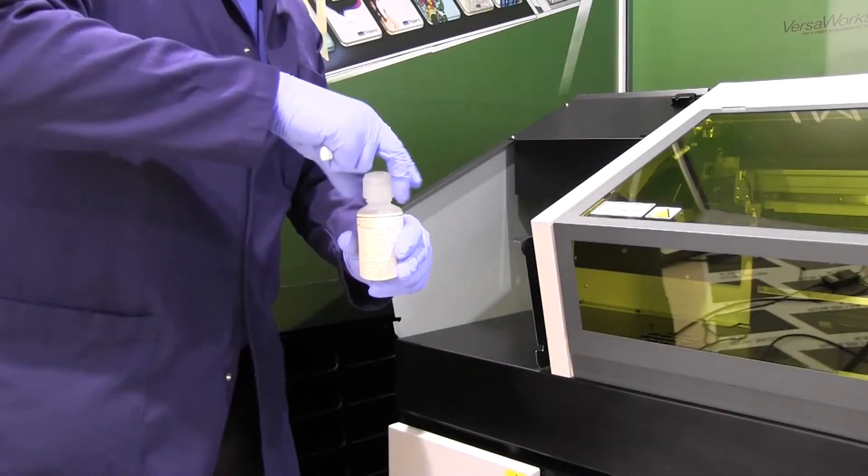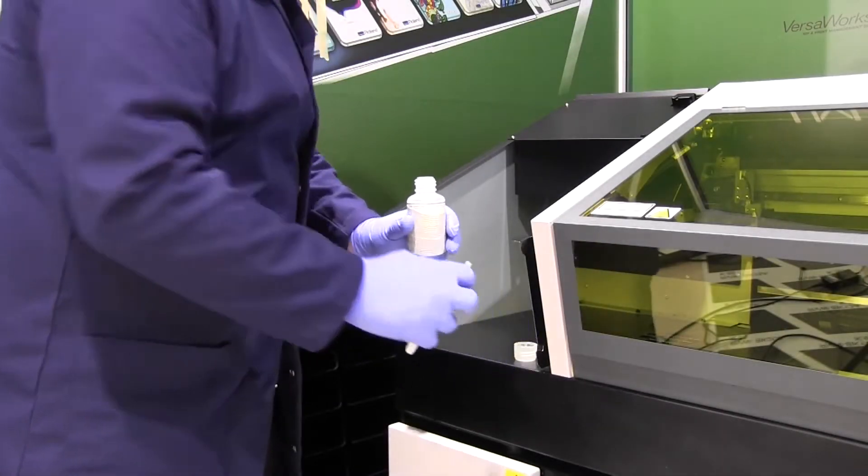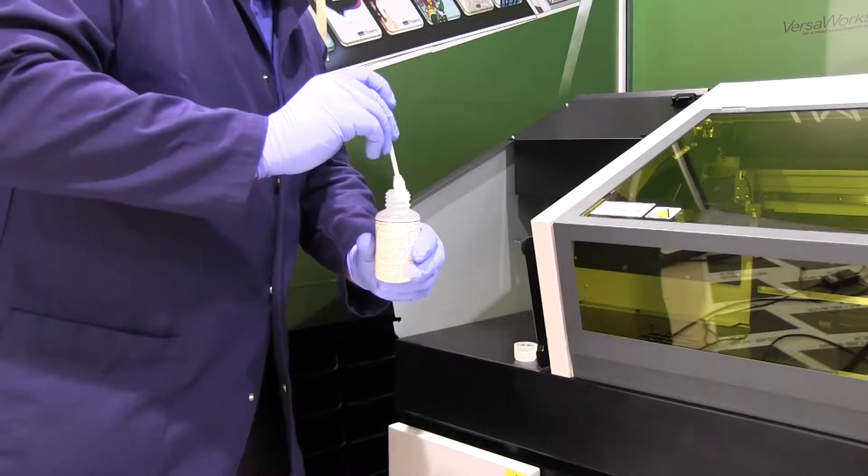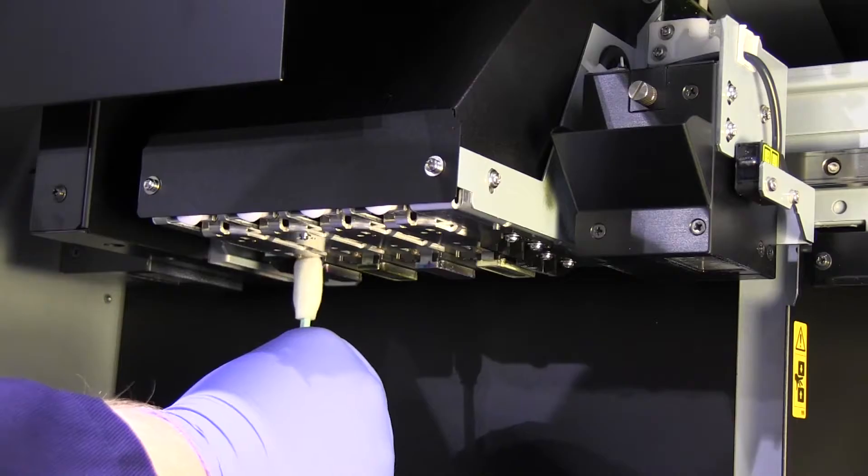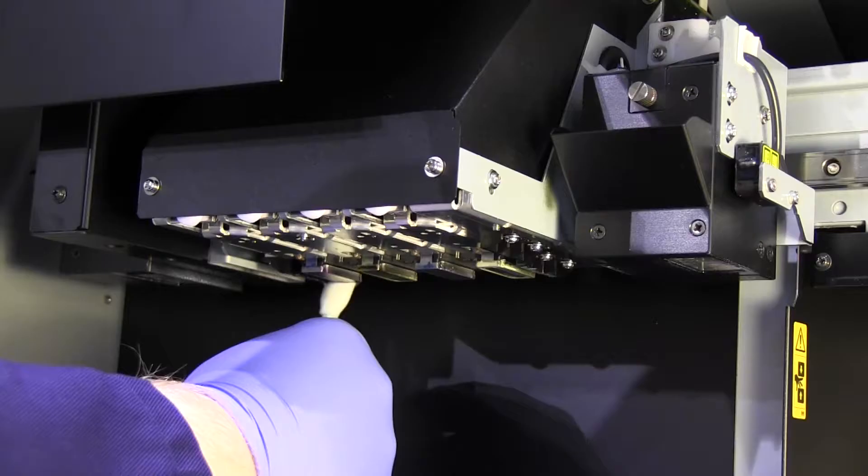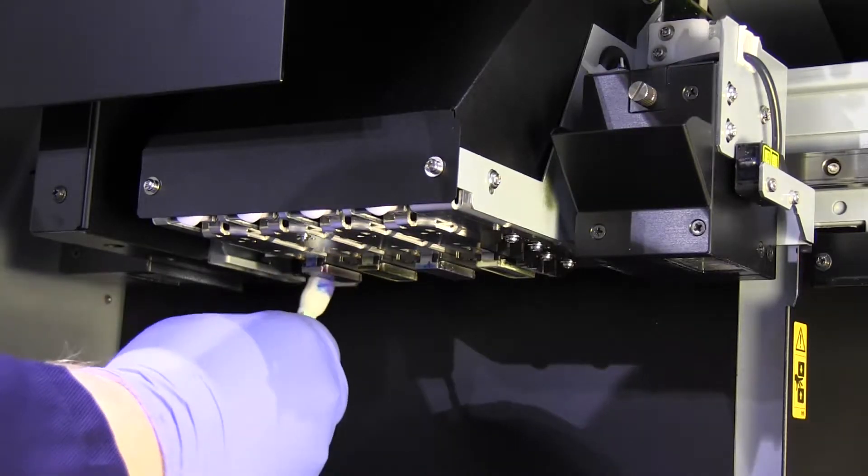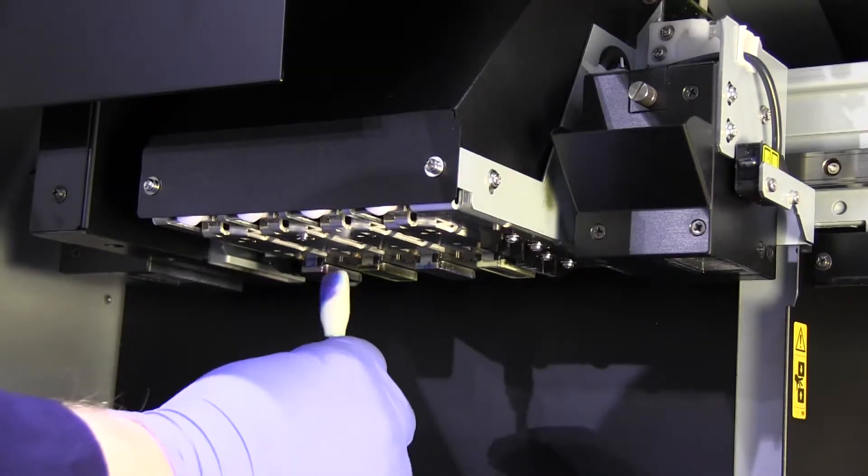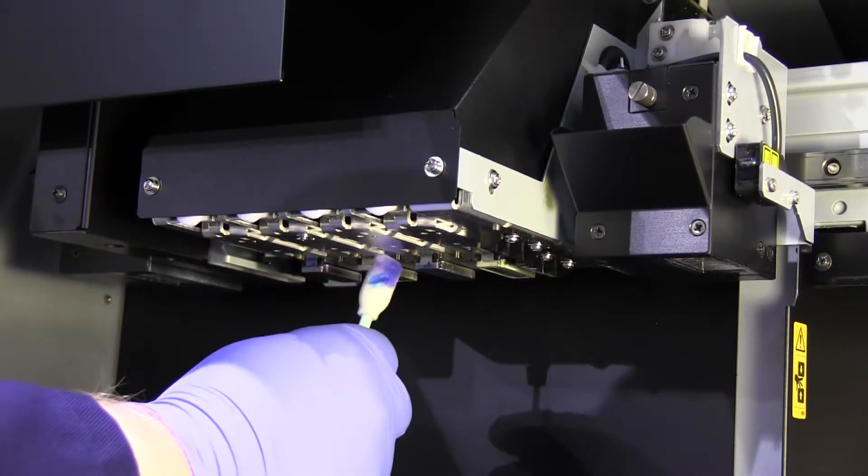Using the cleaning solution for the machine, dip a cleaning swab into the bottle and wipe off any excess. Here we are going to clean the printhead surrounds. Note that we do not clean the printhead surface.